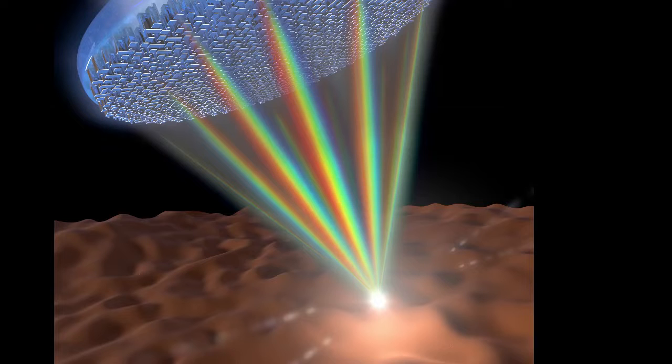The metal lenses developed by the research team use arrays of titanium dioxide nanofins to equally focus wavelengths of light and eliminate chromatic aberration.